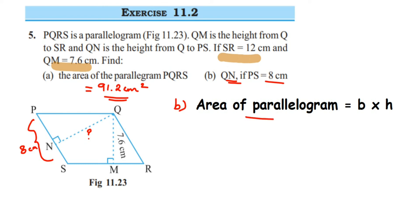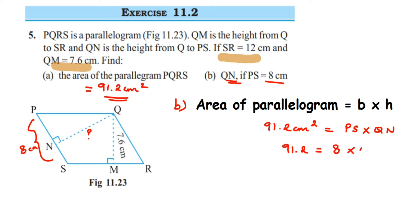Area of parallelogram = 91.2 cm² = base × height = 8 × QN. So 91.2 = 8 × QN. To find QN, we transpose 8 to the other side. Since it's multiplication on the right, it becomes division on the left: QN = 91.2 ÷ 8.